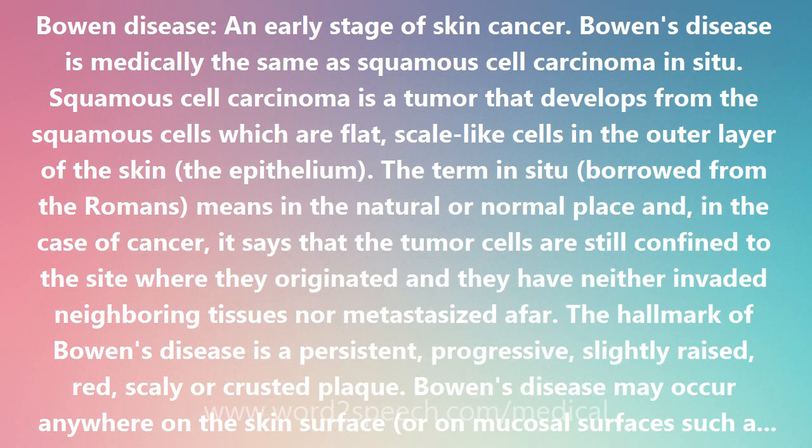The hallmark of Bowen's disease is a persistent, progressive, slightly raised, red, scaly or crusted plaque. Bowen's disease may occur anywhere on the skin surface, or on mucosal surfaces such as in the mouth.